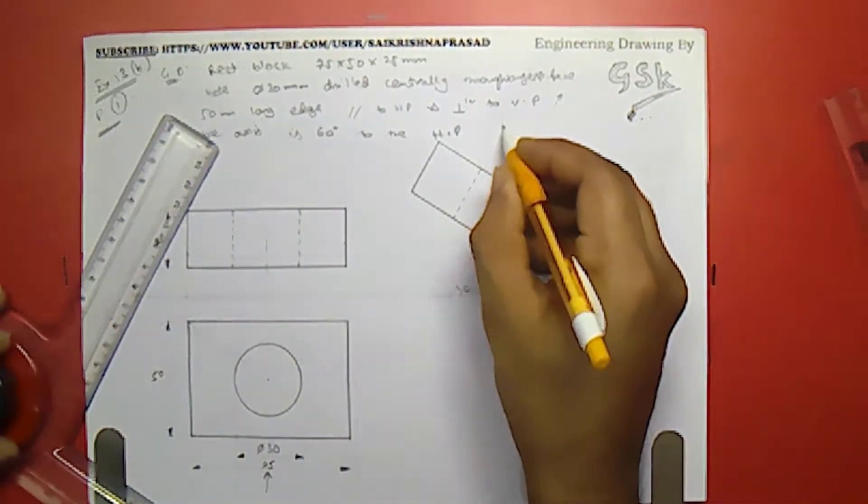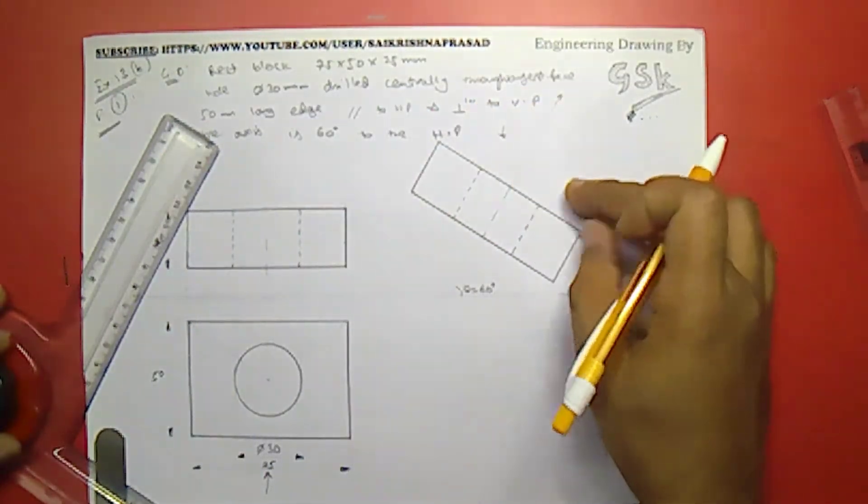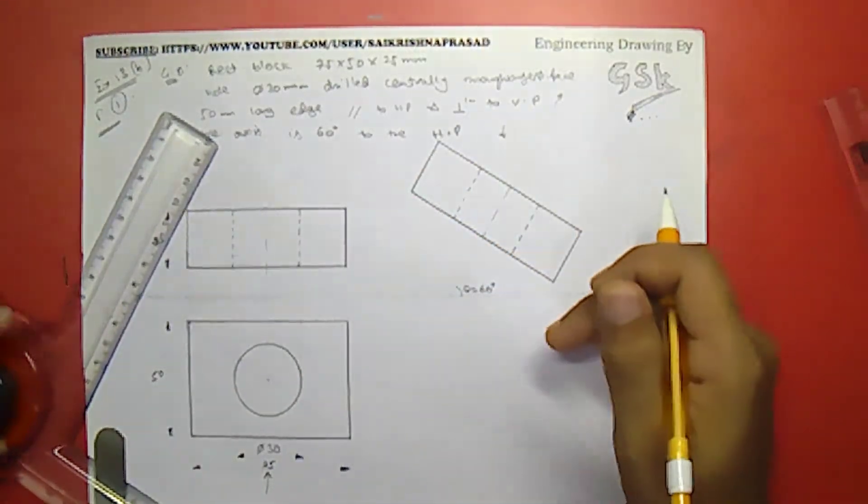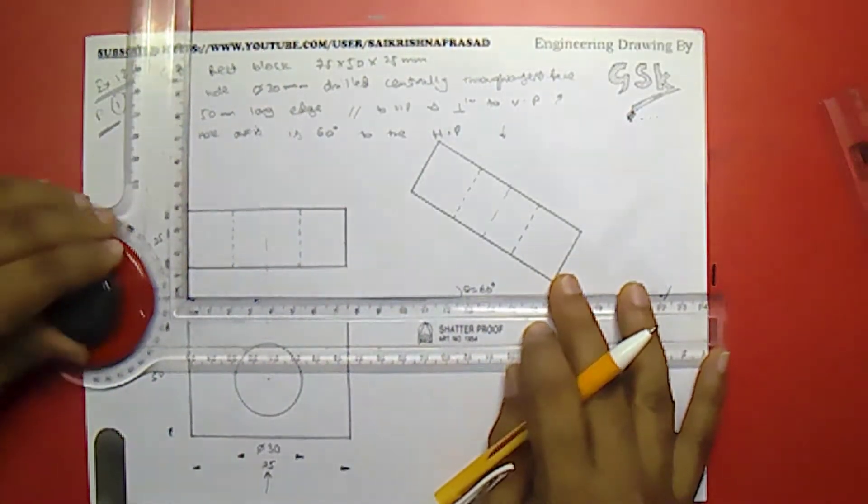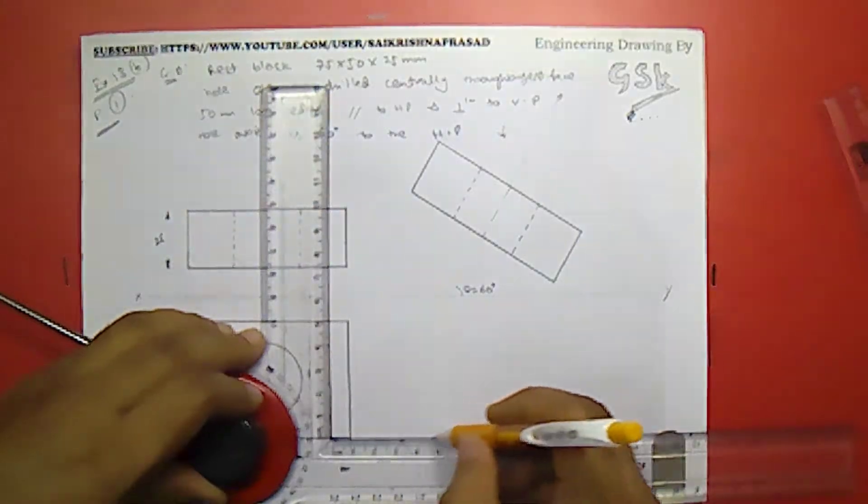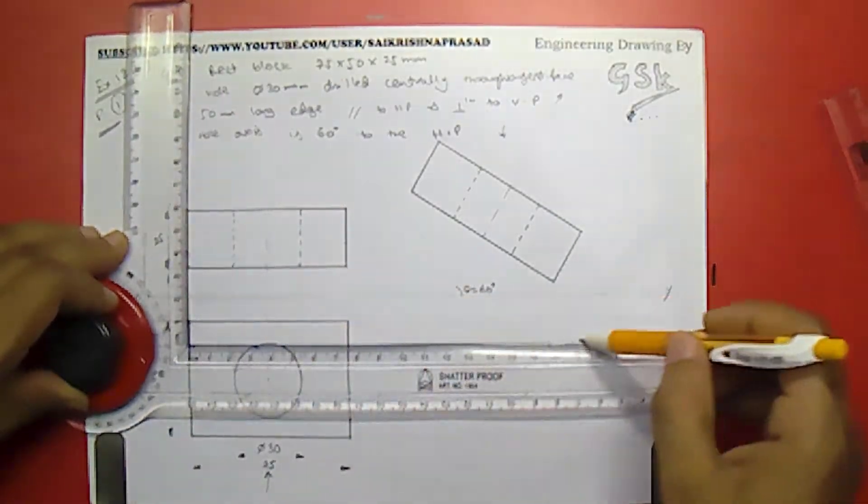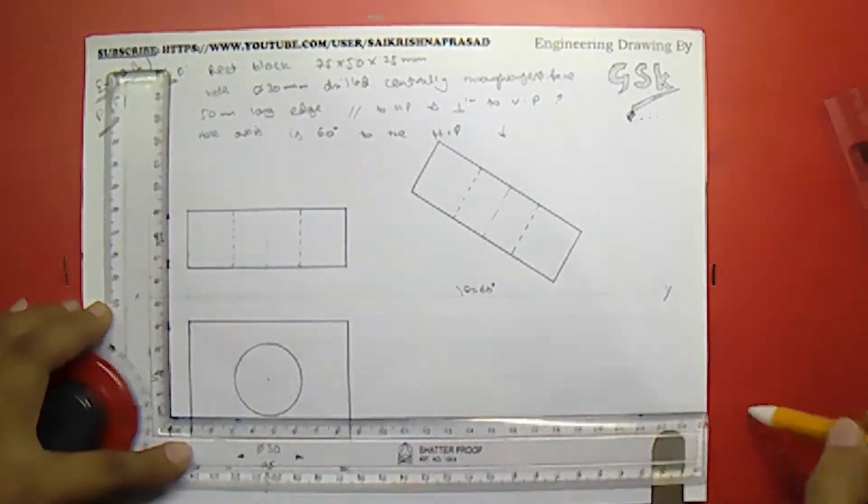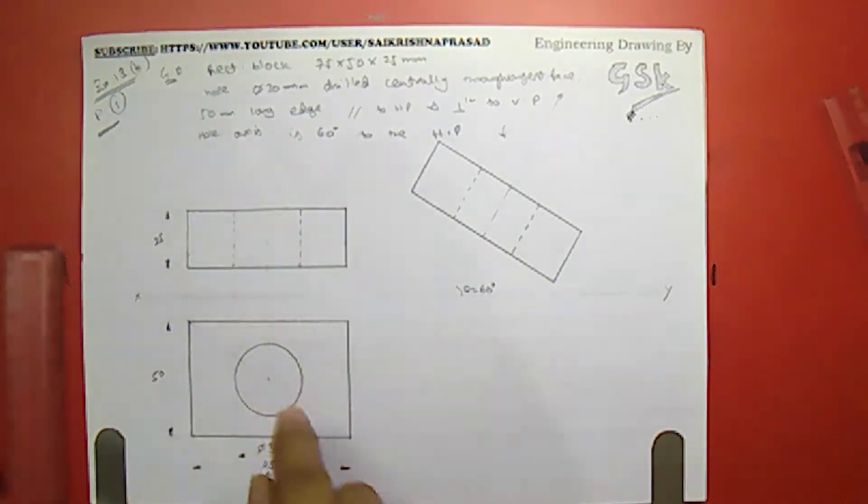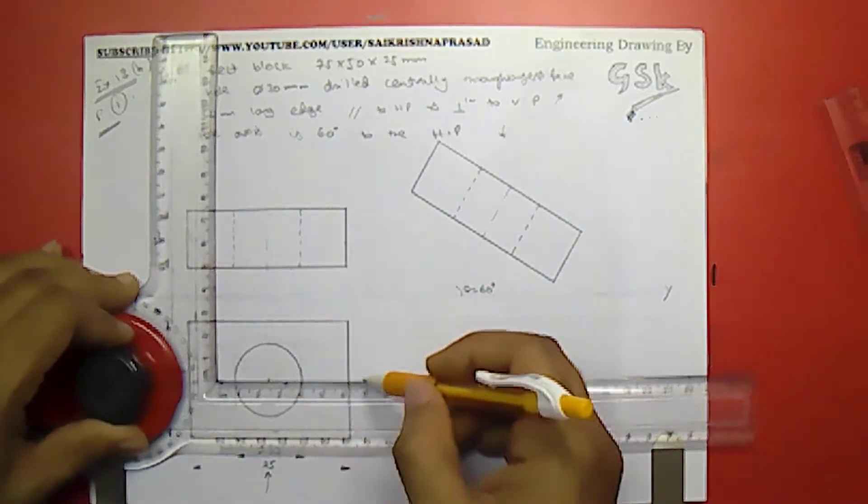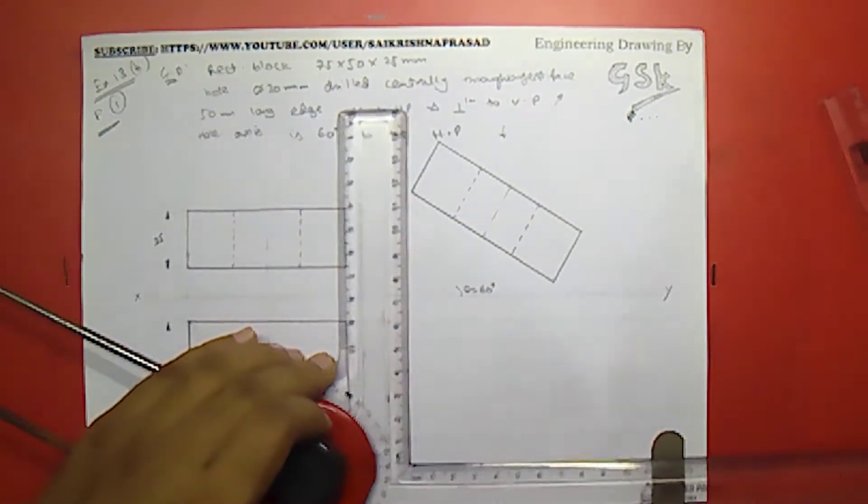So looking in this direction, I can see this surface totally. So I can project that in a true projection. Whatever the hidden part is there, I can use this hidden line for drawing that. So I will be projecting this sideways, then from front view to the top view. So I have projected from each and every corner. Oh, I have forgotten this axis. This axis line for this hole. Now I will be projecting this down.